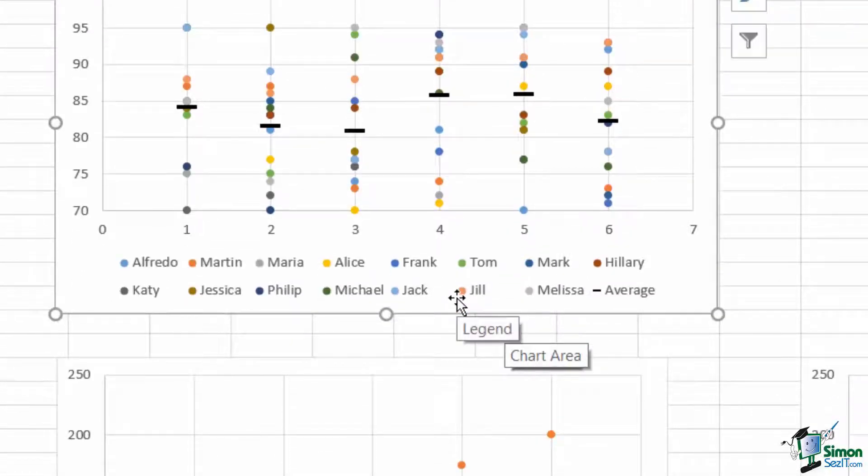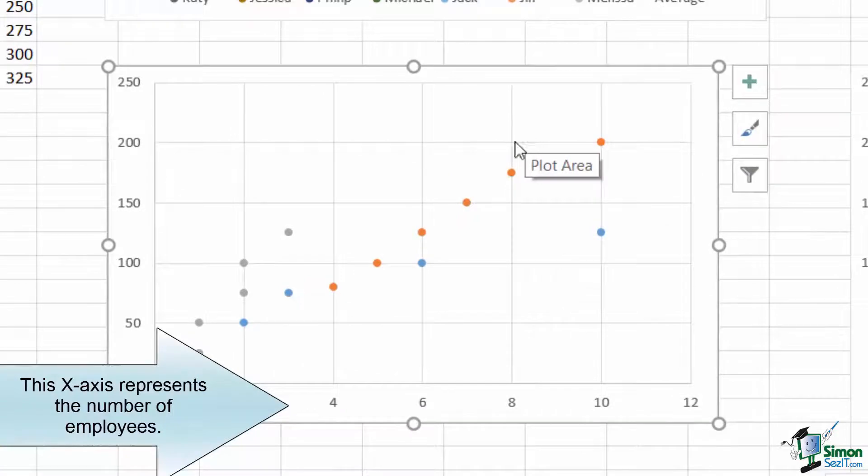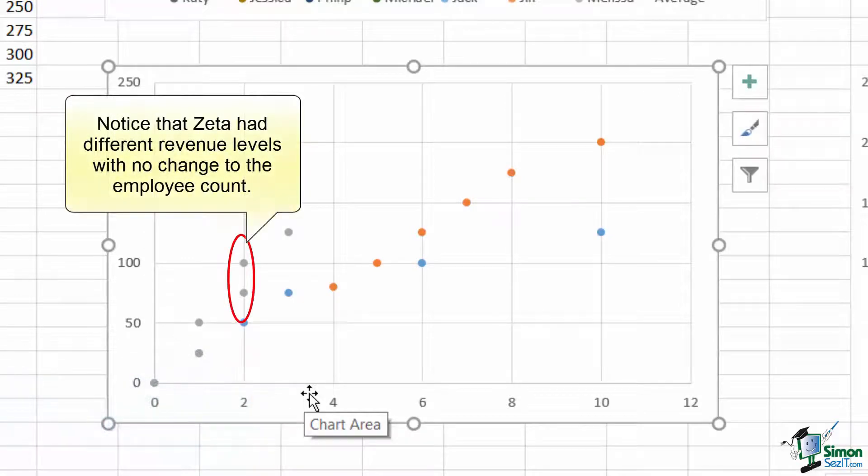For example, we could plot our revenues for each of our three operating units based upon the number of employees working, and see how each correlated to revenue. This shows us how relative changes in the number of employees translated into differences in revenue.